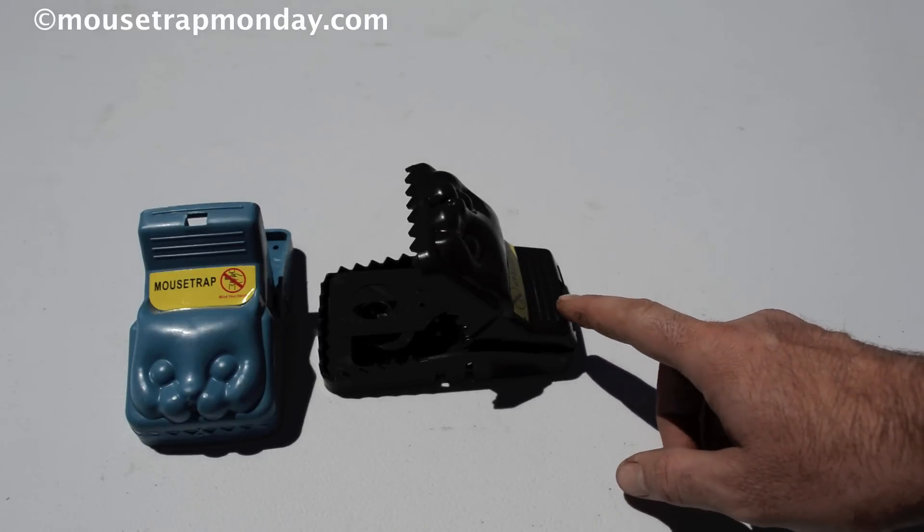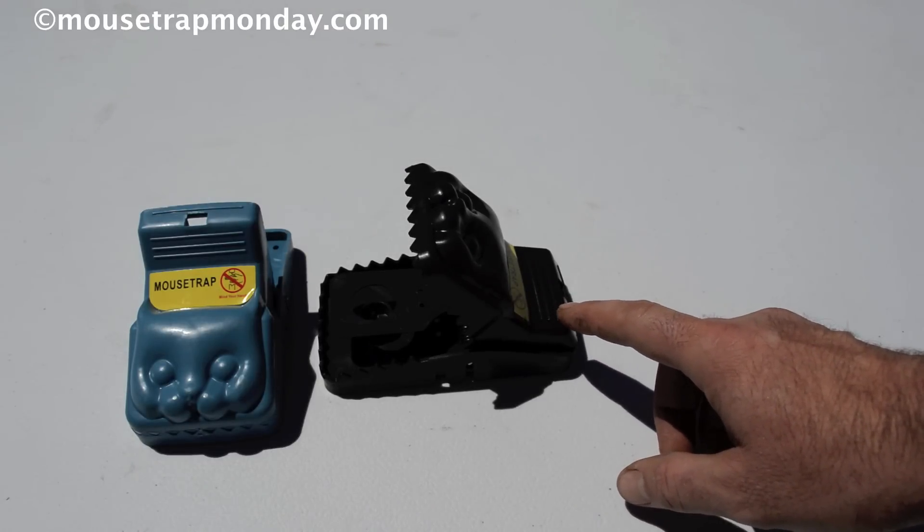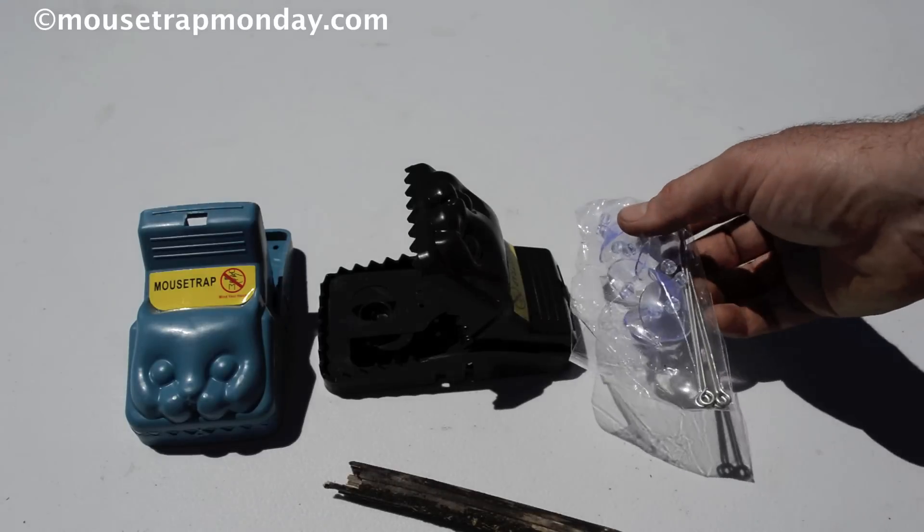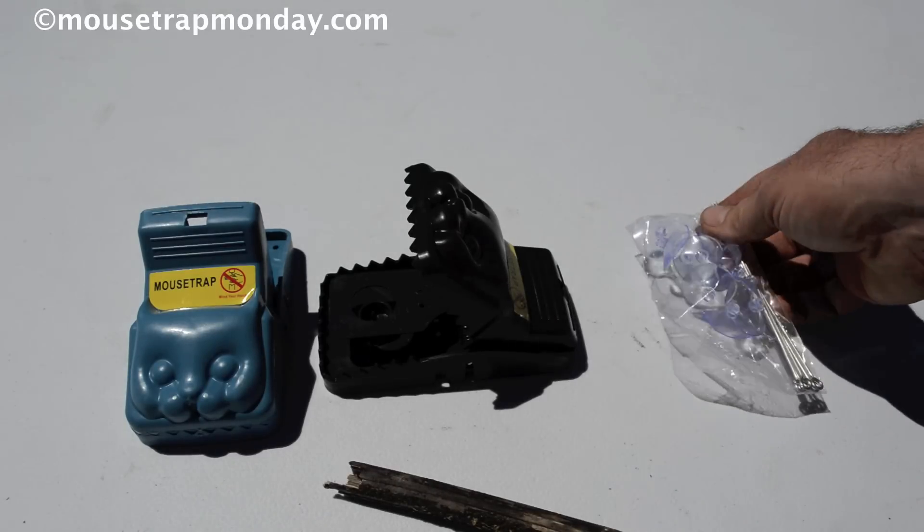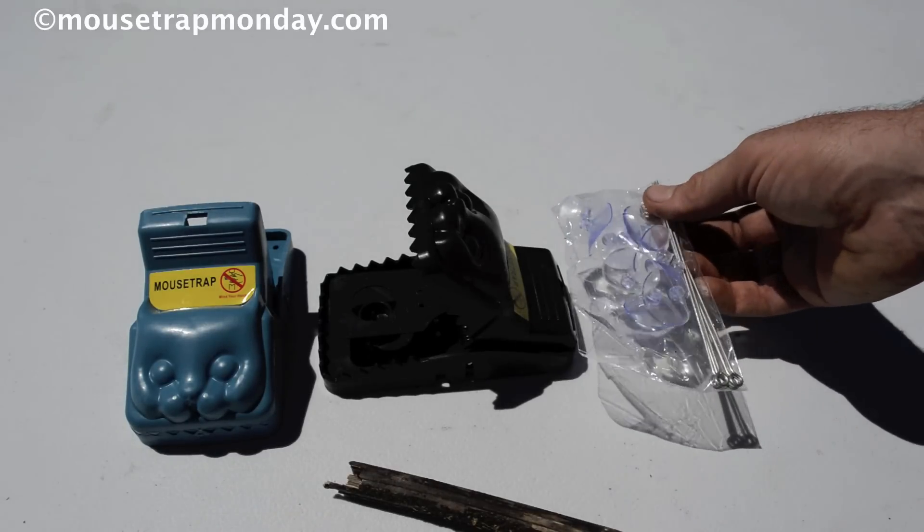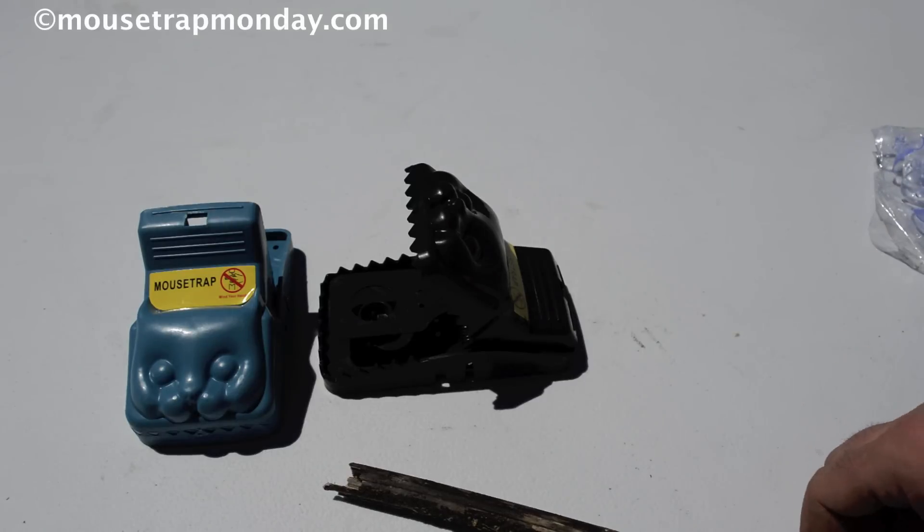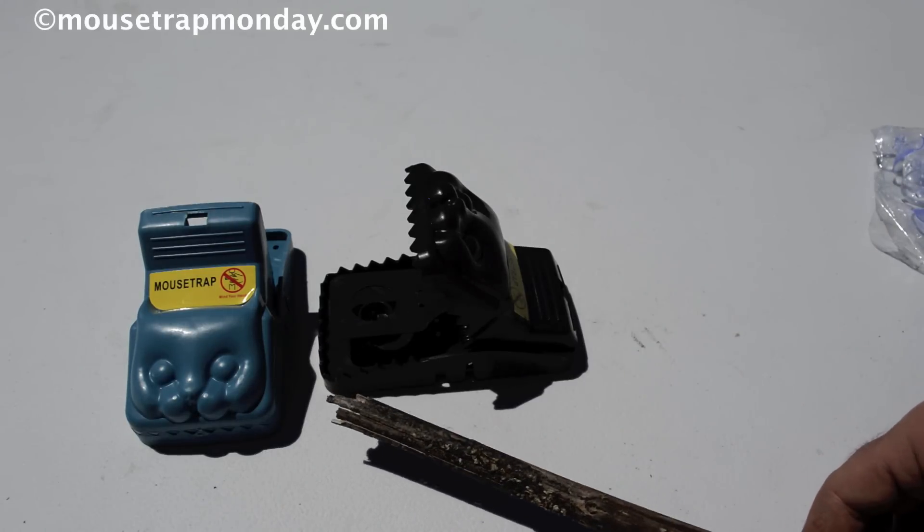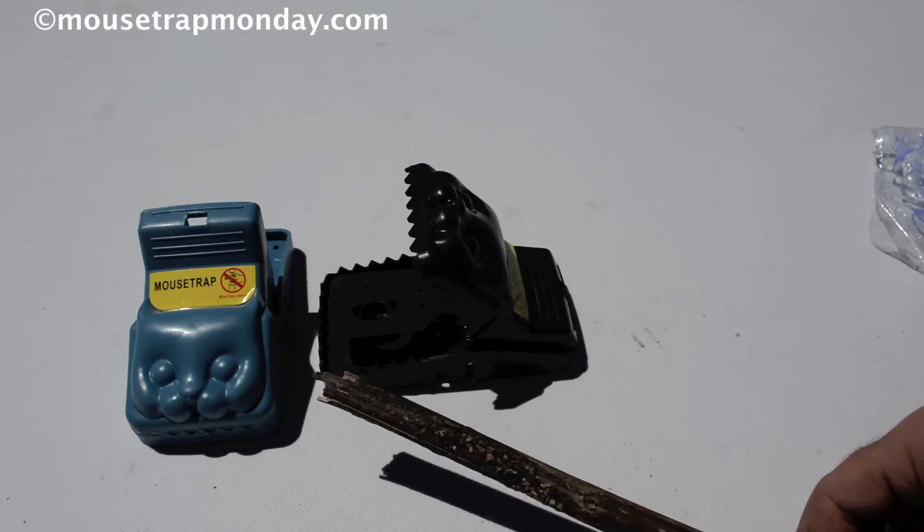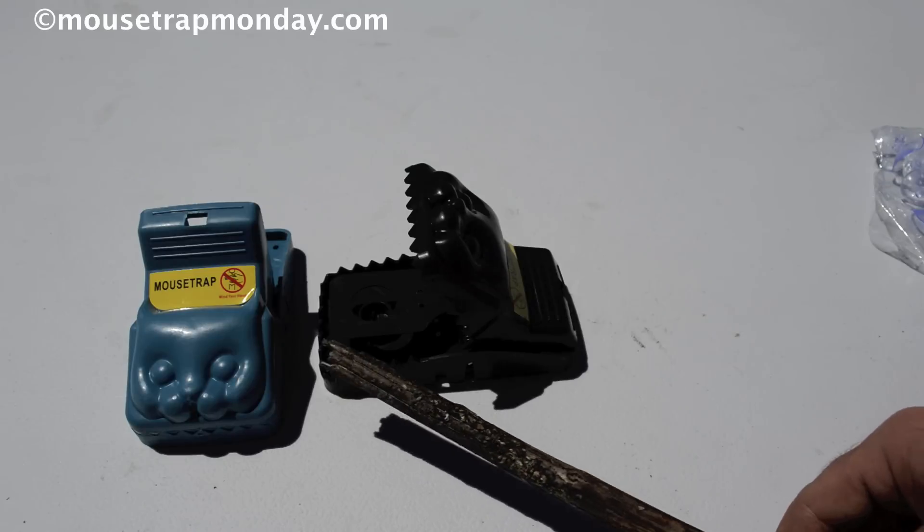But for now, we're going to test out this Black Cat. I got this out of Germany. This also came with little suction cups here that you can attach to the floor to hold it in place, but in the barn floor, these don't work. So we're going to go set up the motion cameras, put some bait on there and see if we can get some mice and rats with this powerful jaws of the Black Cat rodent trap.